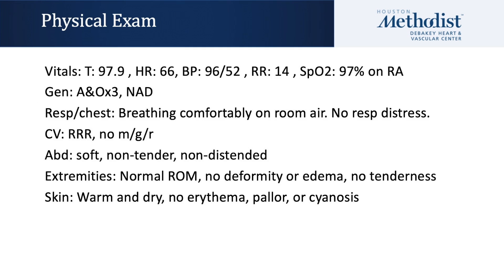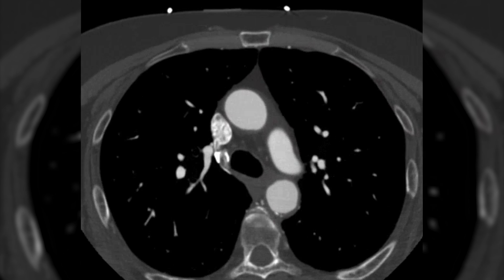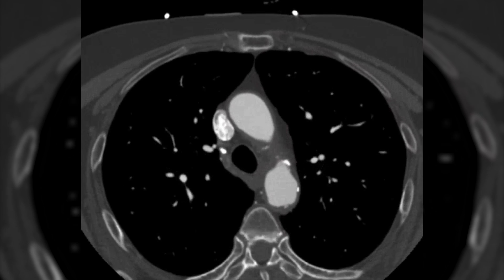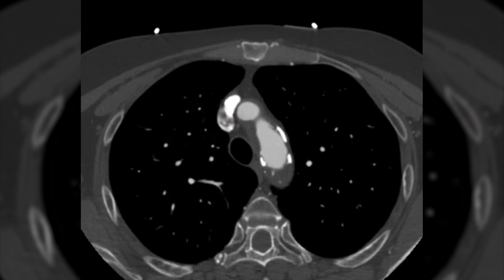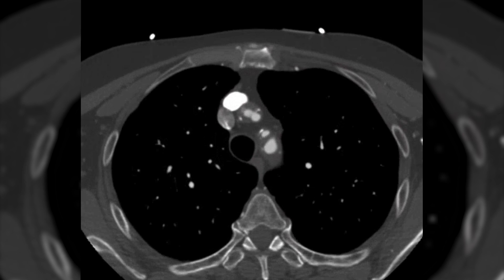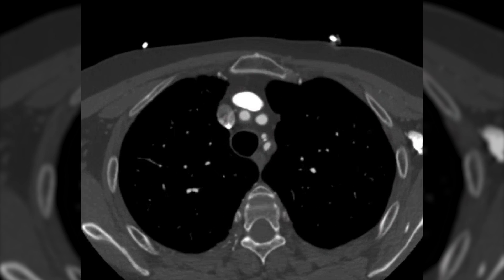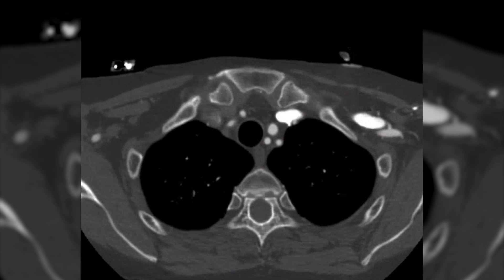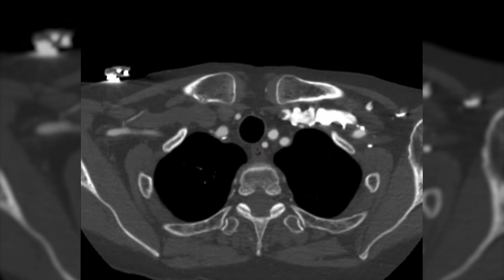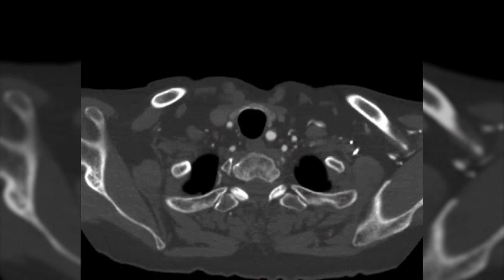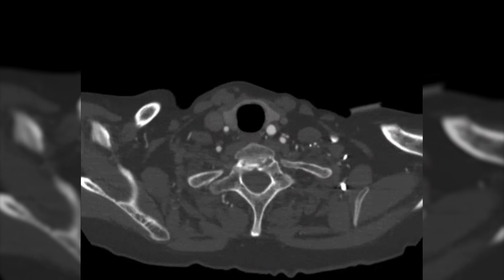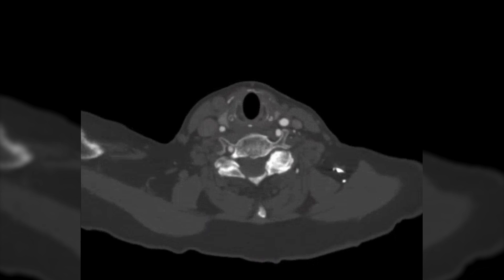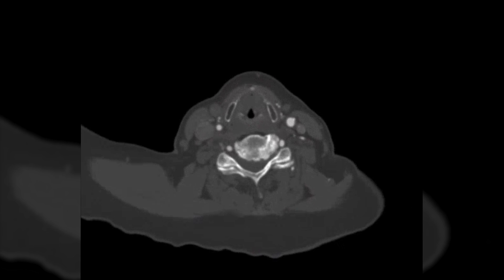Her physical exam is largely unremarkable except for a diminished right radial pulse. Her CTA neck, shown here, revealed severe brachiocephalic artery stenosis as well as bovine arch anatomy. Of note, the patient did not have any significant ICA stenosis.